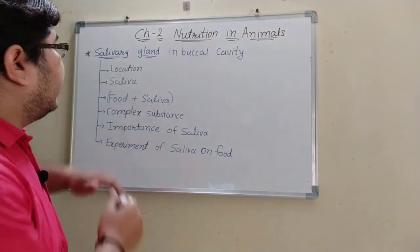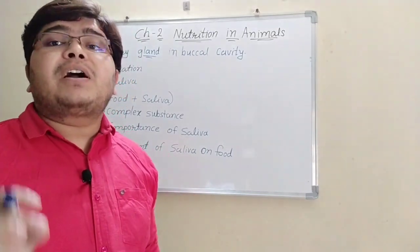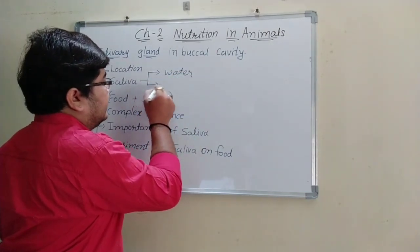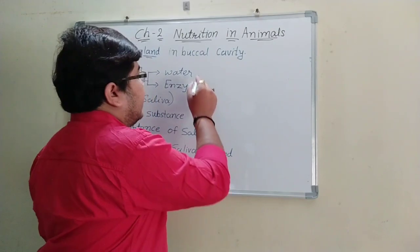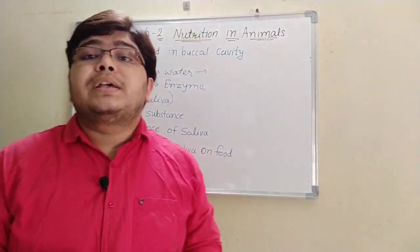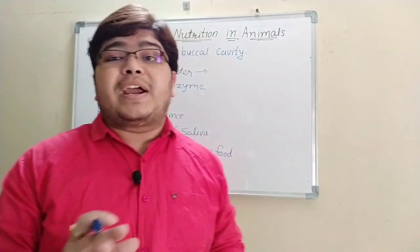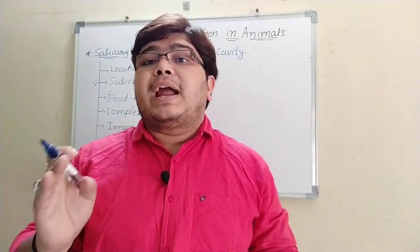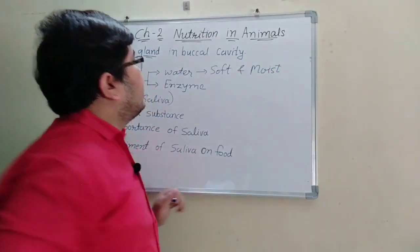The salivary gland secretes saliva. Saliva consists of water and enzymes. Saliva is a sticky fluid, whitish in color. The water part of saliva makes the food soft and moist.